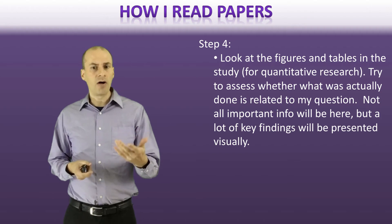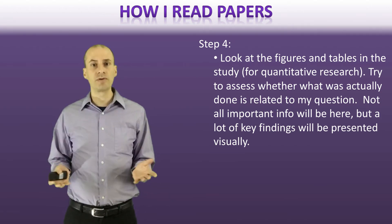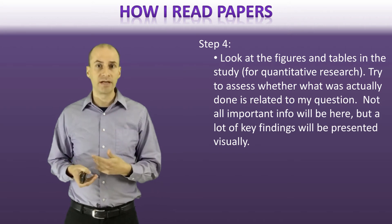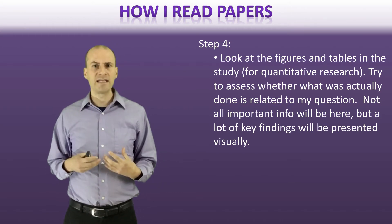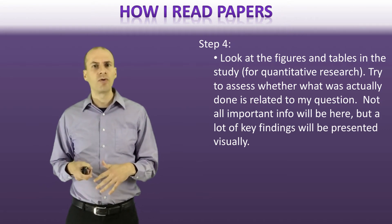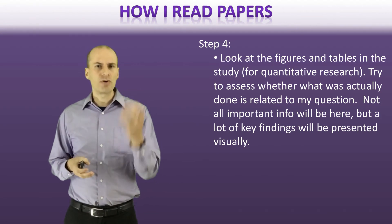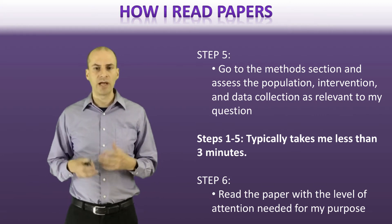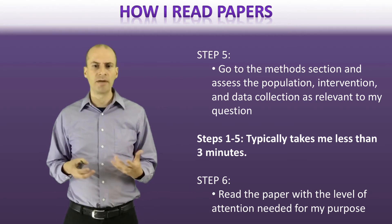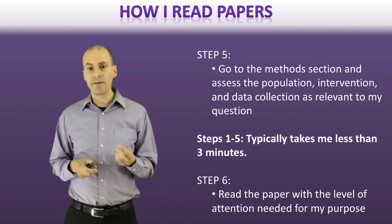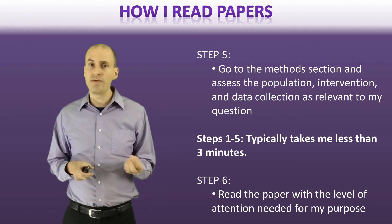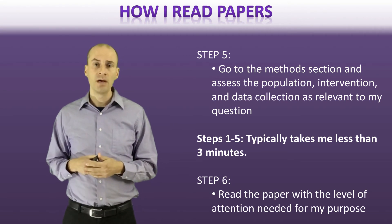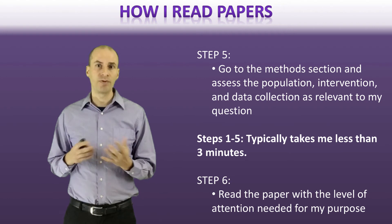If it still looks promising, I'll go to the results section — not reading the whole thing, but taking a quick look at the figures and tables, or quotes if it's a qualitative study. Figures and tables pull out the main ideas, so it's a quick way to check without reading everything. I might also read the titles of the different results sections. Then I go to the methods section to make sure the methods are relevant to what I'm interested in. For steps one through five, I can typically go through a paper in about three minutes, often discarding it in the first minute or two.